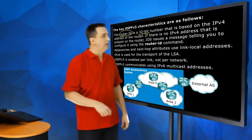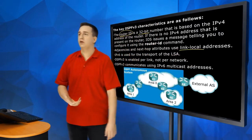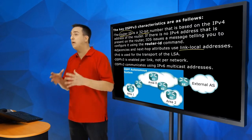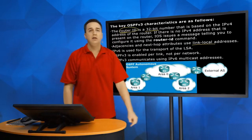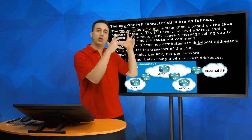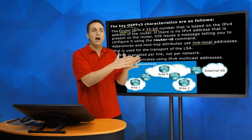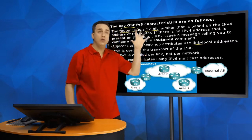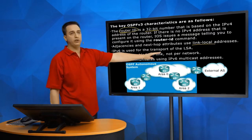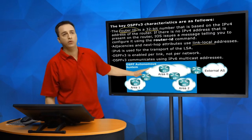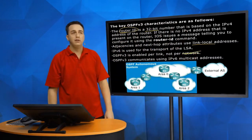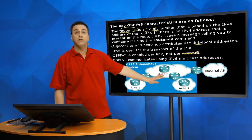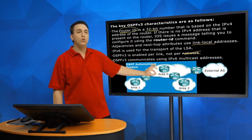OSPFv3 forms neighbor adjacencies using the link-local address — for example, an address starting with FE80. We don't even need a global address to form neighbor adjacencies or for next-hop IP addresses. When we learn about a global IPv6 network, the next-hop IP address is going to be the link-local address of the next router. Also, there is no network command in OSPFv3 — we enable it on a link-by-link basis at the individual interfaces.